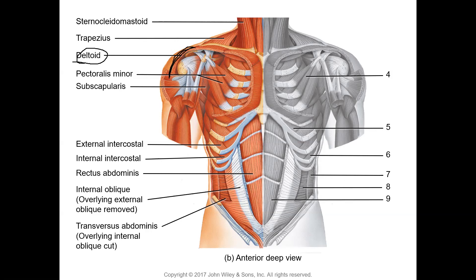The internal intercostal muscles lie underneath the external intercostals, and their contraction pulls the ribs inward, decreasing thoracic volume during expiration. However, the most important muscle for respiration at rest is the diaphragm — the dome-shaped muscle that separates the thorax from the abdomen and is not visible here. It has openings to allow the esophagus, aorta, and vena cava to pass through.